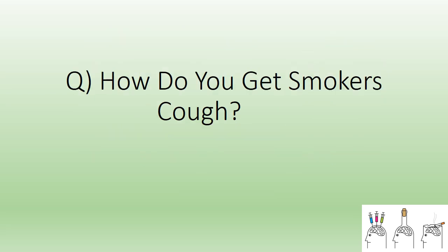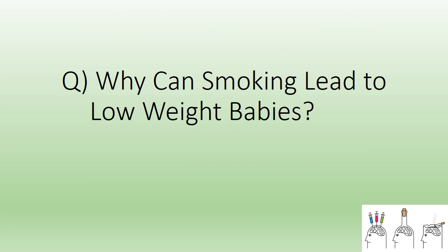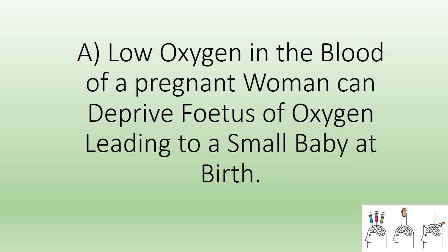How do you get smoker's cough? Smoking damages the cilia and epithelial tissue lining the tubes in the lungs, encouraging mucus to be produced. This sticks in air passages, causing smoker's cough. How can smoking lead to low-weight babies? Low oxygen in the blood of a pregnant woman can deprive the foetus of oxygen, leading to a small baby at birth.